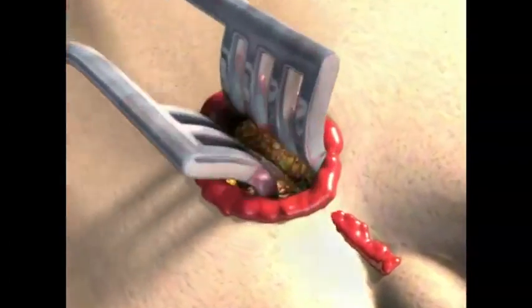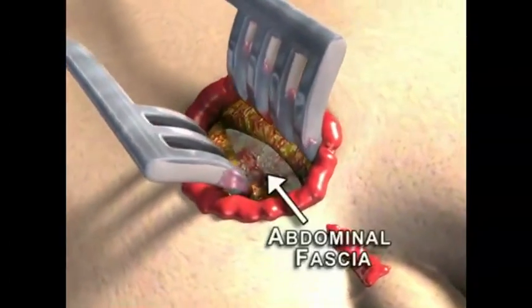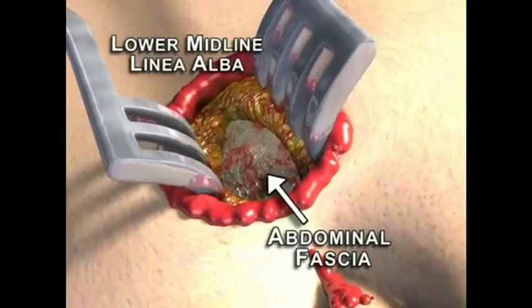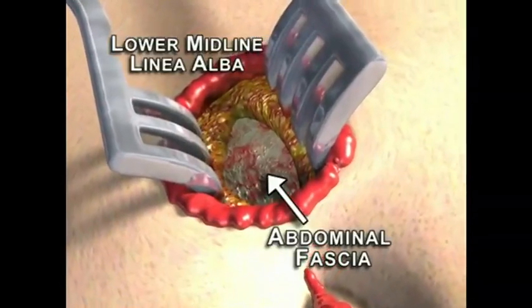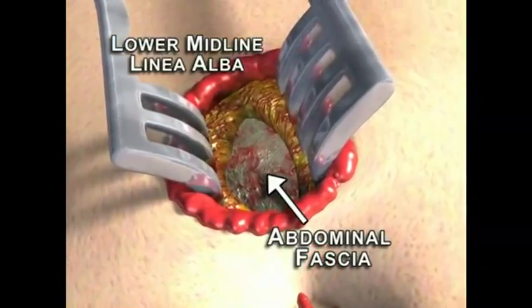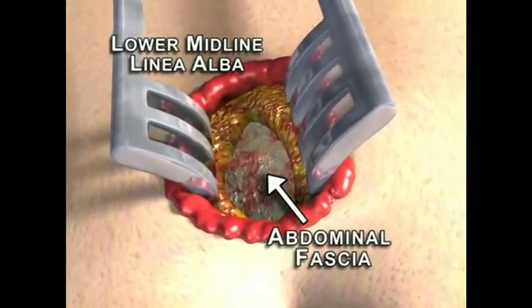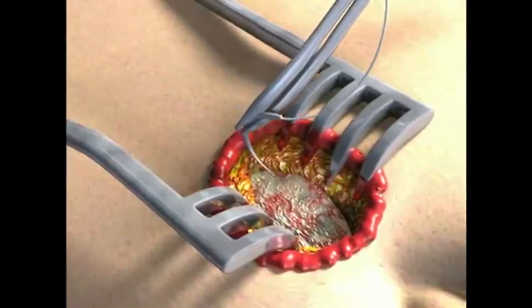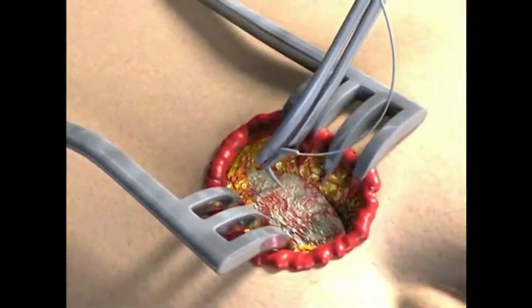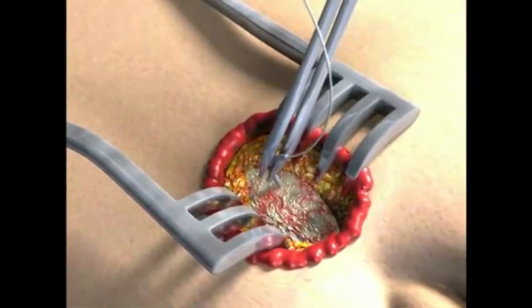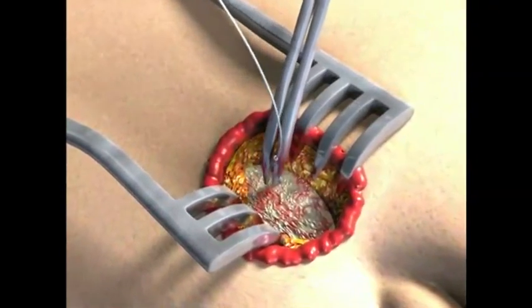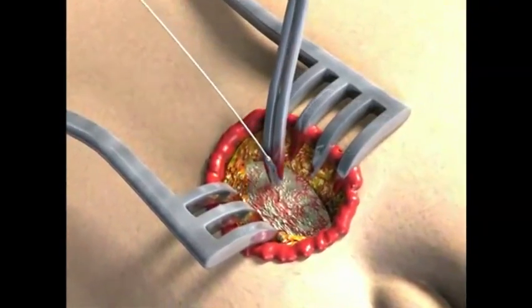In the lower midline, this is the linea alba, and represents a single fascial plane overlying the peritoneum. Stay sutures of 2-O-Vicryl are placed in the fascia on both sides of the incision.